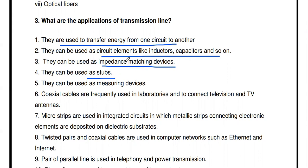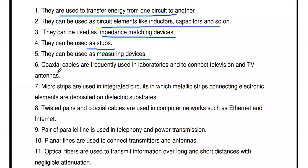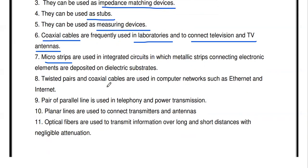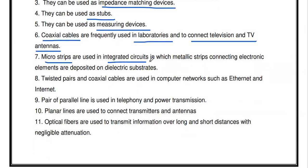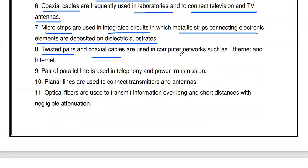They can be used as measuring devices — to measure impedances as well as SWR. Especially the coaxial cable is frequently used in laboratories and to connect television and TV antennas. Microstrip transmission lines are used in integrated circuits, where metallic strips connecting electronic elements are deposited on dielectric substrates. Twisted pair cable and coaxial cable are used in computer networks such as Ethernet and internet connections.